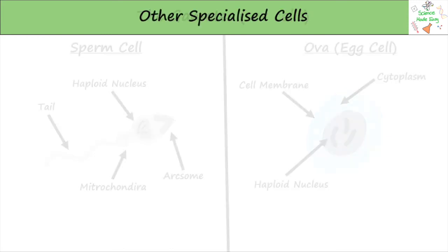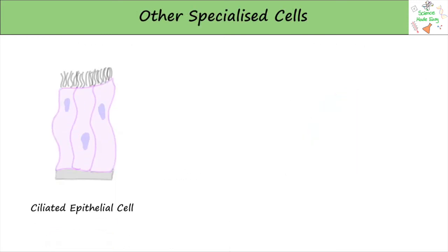Here are some more types of specialized cells. The first is the ciliated epithelial cell, which is adapted to have hair-like structures on it to help move substances along. These are usually found in places like your intestines, where they need to move substances.